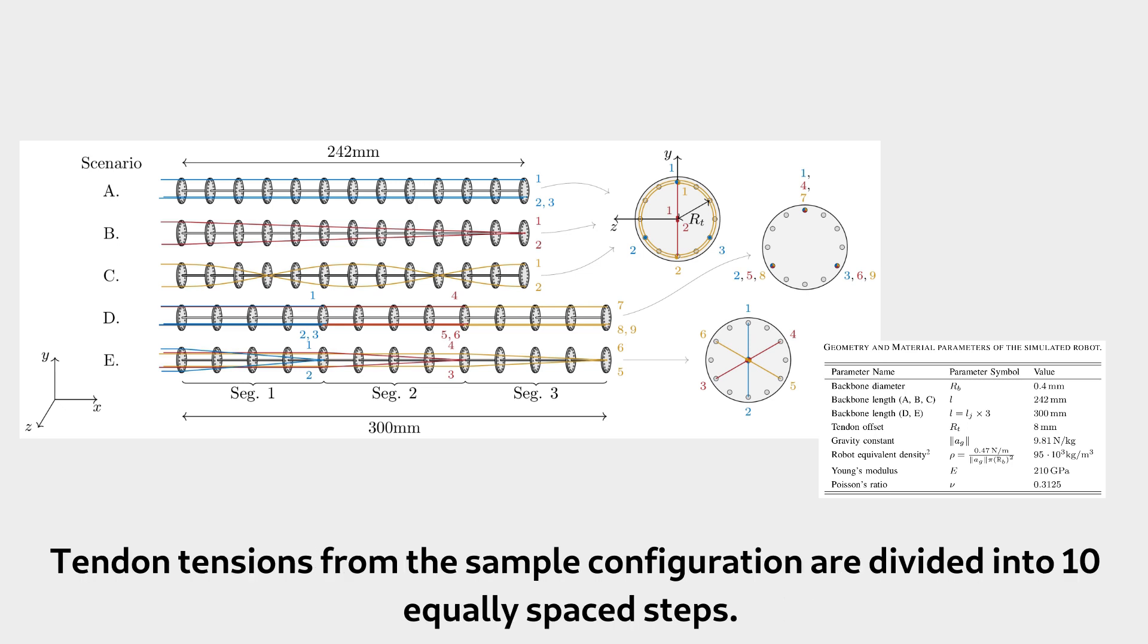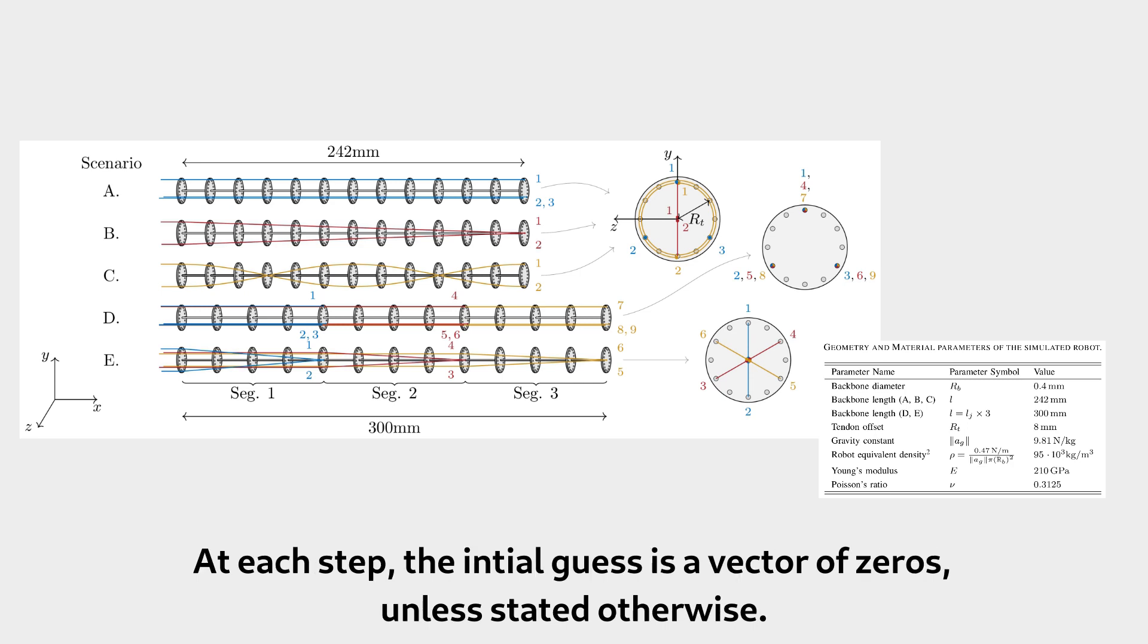Tendon tensions from the sample configuration are divided into ten equally spaced steps. At each step, the initial guess is a vector of zeros, unless stated otherwise.